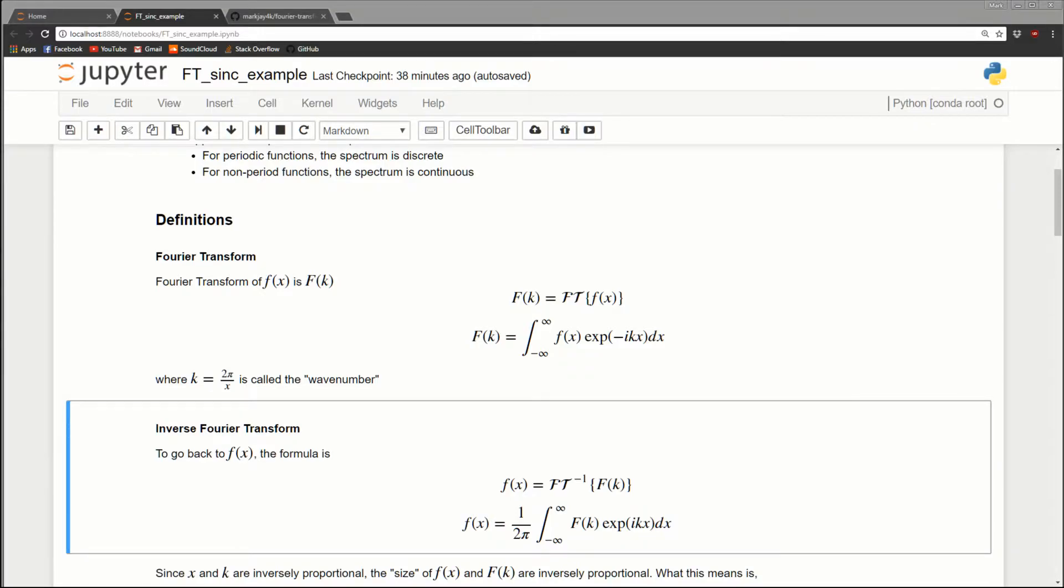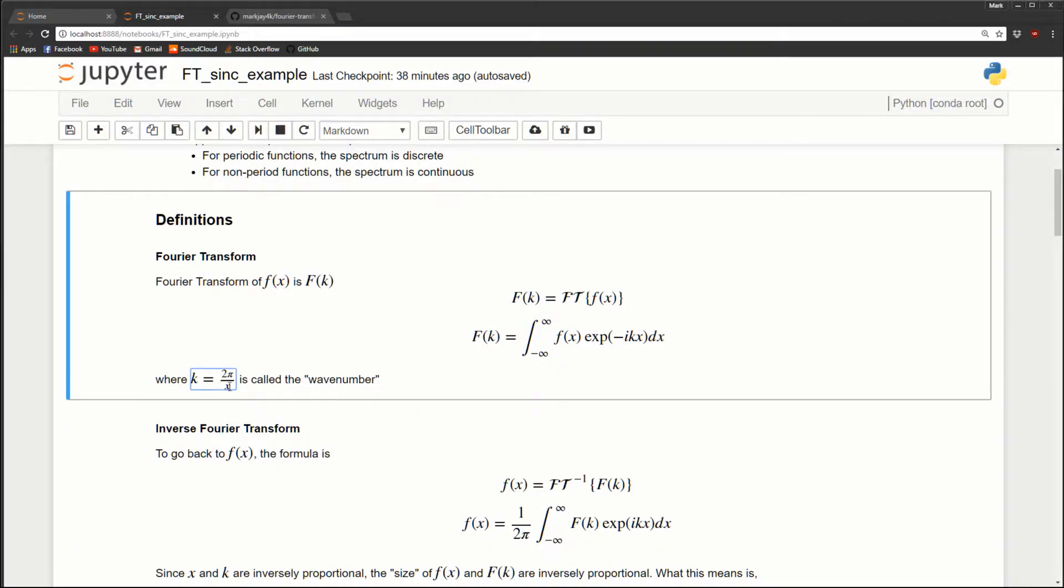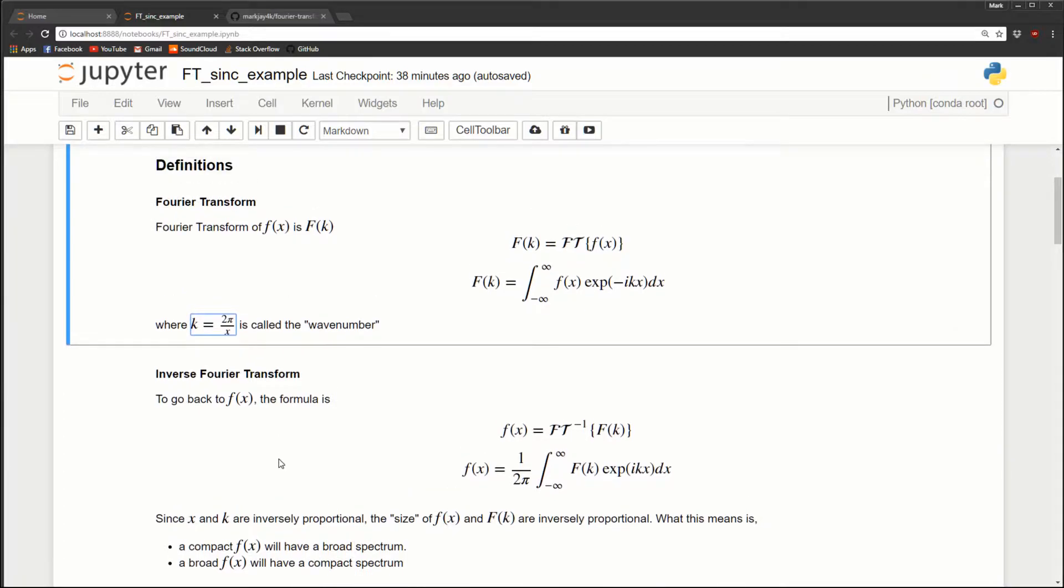Now I'd like to briefly talk about the key differences between a function and its transform. Because our variable k is inversely proportional to x, there's a bit of an inverse proportionality between a function and its transform. If we have a compact function in x, say just a short pulse in x, that means its transform is going to be very broad. A very compact function is going to have a lot of high frequency components, so its transform is going to be this broad function.